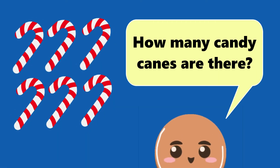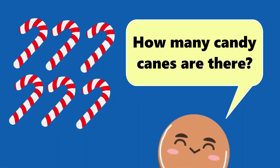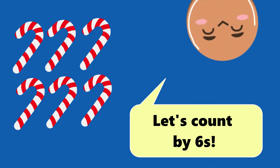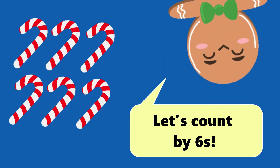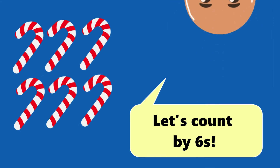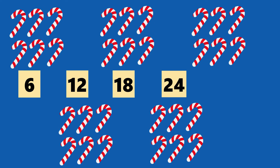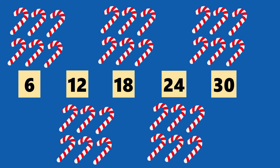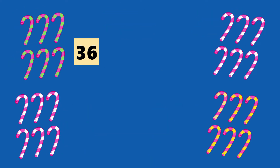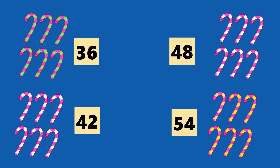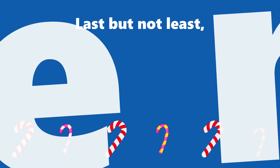How many candy canes are there? Let's count by 6: 6, 12, 18, 24 and 30, 36, 42, 48 and 54. Last but not least,